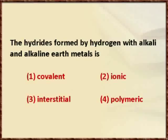In the question we should see the formation of hydrides. In the periodic table, the first two groups consist of metals — the first group consists of alkali metals and the second group consists of alkaline earth metals. Generally, metals form basic oxides and can also form hydrides.